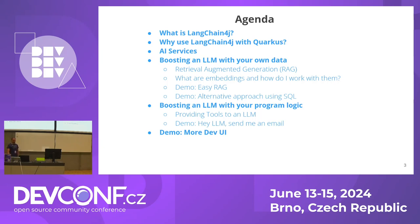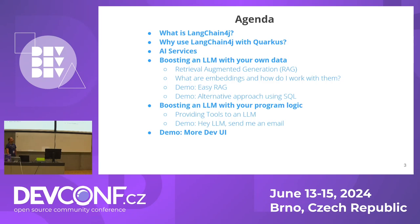Here's what's on the agenda: I'll explain what LangChain4j is and why you should use it with Quarkus. I'll explain what an AI service is, because that's one of the core abstractions provided by LangChain4j. I'll talk about other abstractions it offers, retrieval augmented generation, a quick RAG pipeline setup, an alternative SQL-based RAG approach, and how to build autonomous agents by allowing the LLM to run your own code.